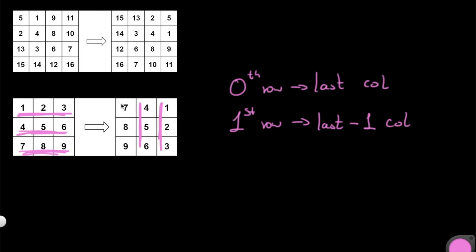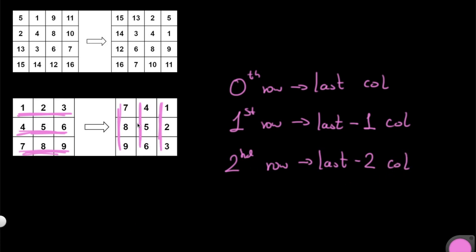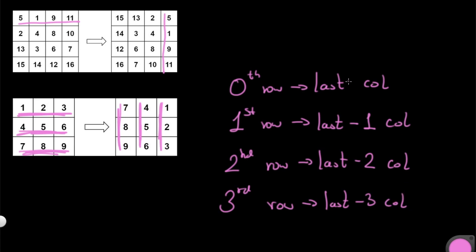The second row ends up becoming the last-minus-two column. So we've found this relationship, and looking at the 4x4 example it's the same thing — the first row becomes the last column, and the relationship continues. For the 4x4, the third row becomes the last-minus-three column, and you can think of the first as last-minus-zero. So we have this very direct relationship and we want to code it out.